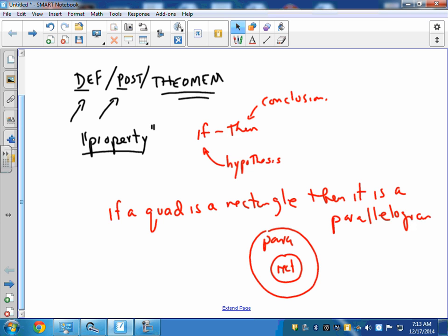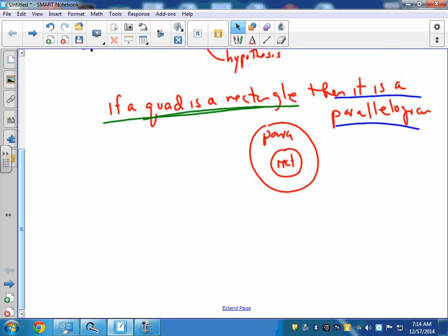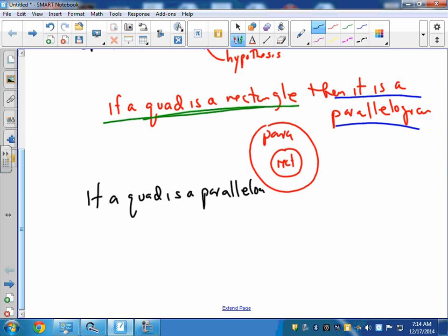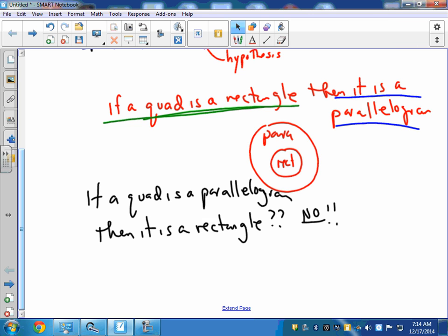What happens if we swap around the hypothesis and the conclusion? We're just going to trade places with those and see what happens. If a quadrilateral is a parallelogram, then it is a rectangle? And obviously we're going to put a question mark there, and the answer is no. There are parallelograms, lots of parallelograms that are not rectangles.